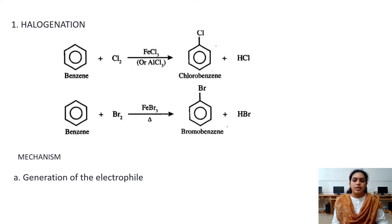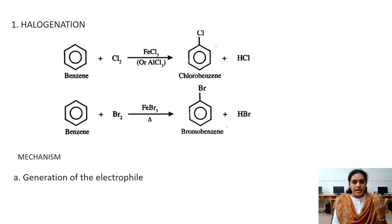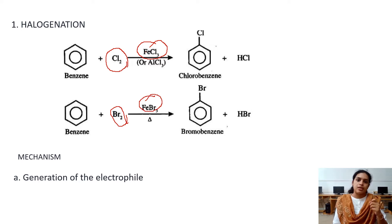Now let us see the important reactions in this category one by one. The first example is halogenation. Benzene and a halogen — normally chlorine or bromine — undergo electrophilic substitution only in the presence of a catalyst. We take FeCl3 as catalyst for chlorination and FeBr3 for bromination, giving chlorobenzene or bromobenzene respectively.